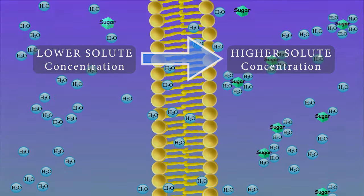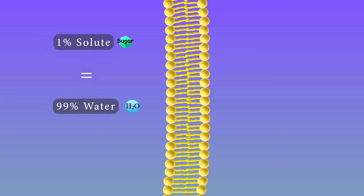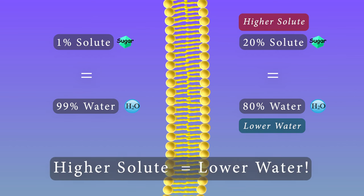For example, a solution with 1% solute is 99% water, but a solution with 20% solute is only 80% water. The higher the solute concentration, the lower the water concentration, and vice versa.